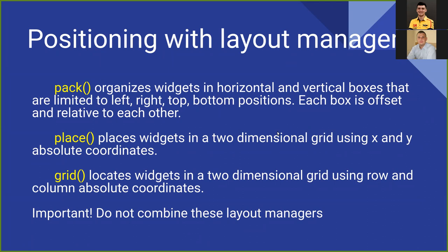Tkinter has three built-in layout managers that use geometric methods to position widgets in an application frame. Pack organizes widgets in horizontal and vertical boxes limited to left, right, top, and bottom positions, where each box is offset relative to each other. Place places widgets in a two-dimensional grid using x and y absolute coordinates. Grid locates widgets in a two-dimensional grid using row and column absolute coordinates. It is important to know that pack, place, and grid should not be combined in the same master window — choose one method and stick with it.